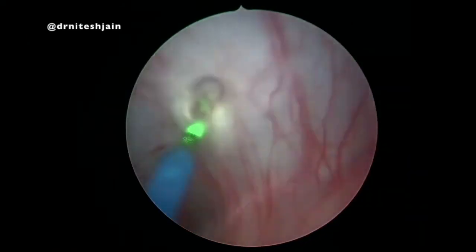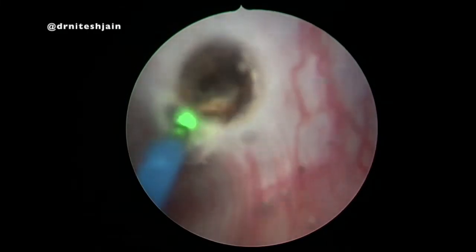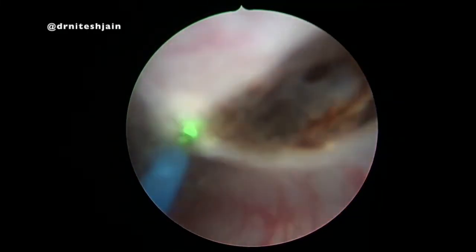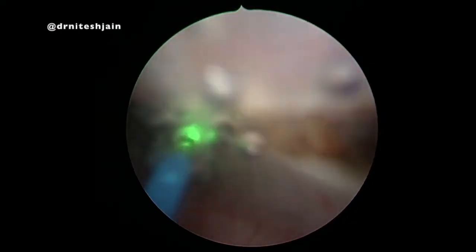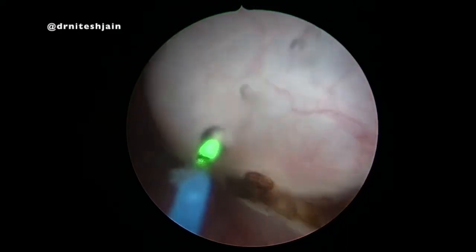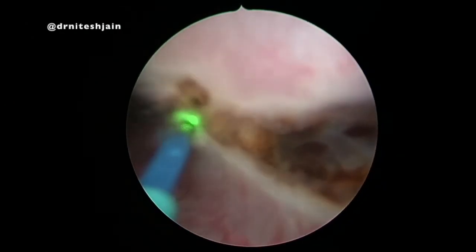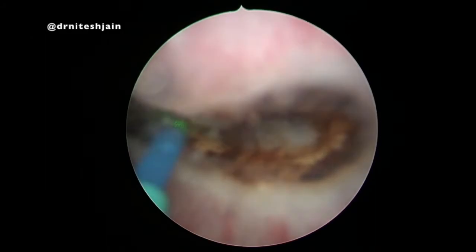Using thulium laser set at 50 watts, the incision is given parallel to the floor of bladder in a smiley shape. The smiley incision is given because the upper flap acts like a valve and can prevent vesicoureteric reflux.